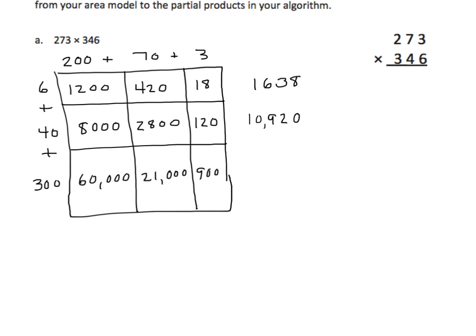Moving along to the hundreds partial product: in the ones place I have zero, in the tens place I have zero because I'm multiplying by hundreds. I have nine in the hundreds place, one in the thousands place, and eight in the ten-thousands place. Now let's go to our standard algorithm here. Hopefully we've got enough room to stretch this out. We want to see if our partial products in our area model match our partial products in the algorithm.